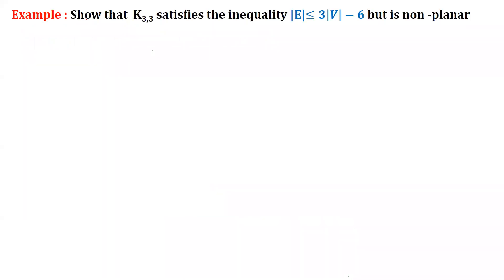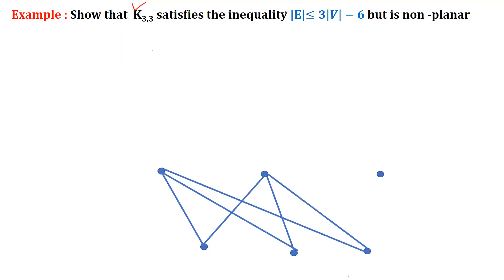We have to prove that K_{3,3} satisfies the inequality e ≤ 3v − 6 of a planar graph, but it is non-planar. As noted earlier, these results are one-sided — it is possible for a graph to satisfy the inequality and still be non-planar. K_{3,3} is such an example: it satisfies the planar inequality but we will still prove it is non-planar. The K_{3,3} graph has three vertices on each side.